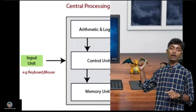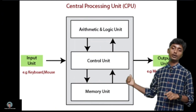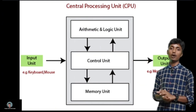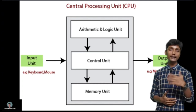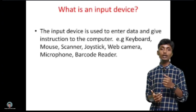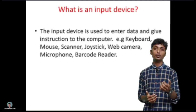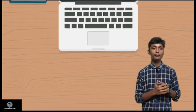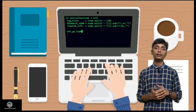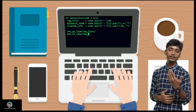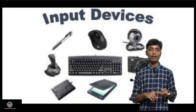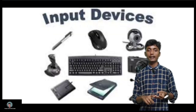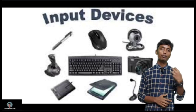Firstly, we will discuss the block diagram of a computer. The first part is the input. What is an input device? An input device is used to accept the data and instructions into the computer. Examples include keyboard, mouse, ball pen, and scanner.